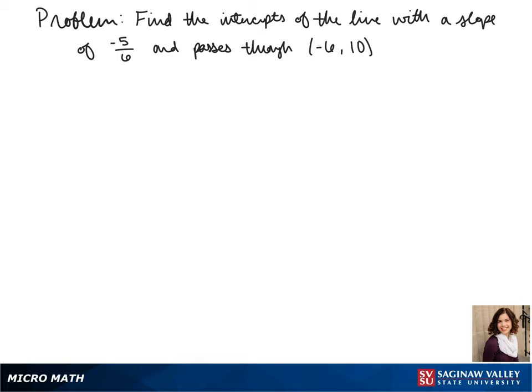Welcome to another day of algebra. Today we'll be finding the intercepts of a line with a slope of negative 5 sixths and that passes through the point negative 6, 10.